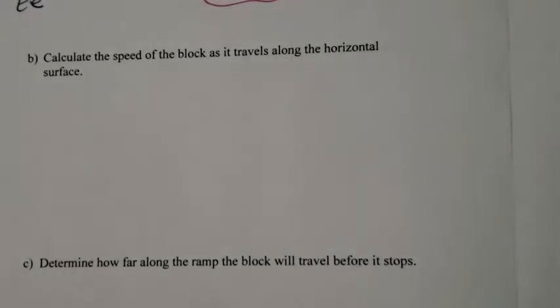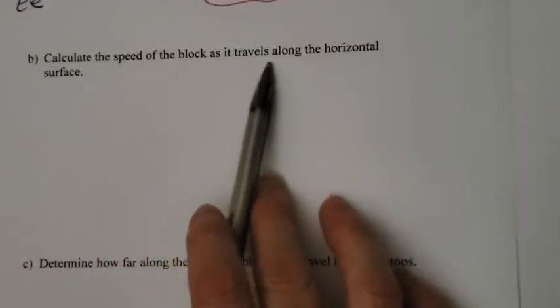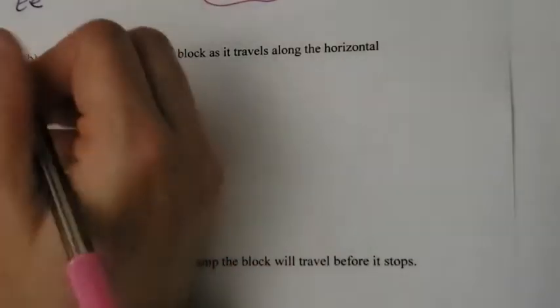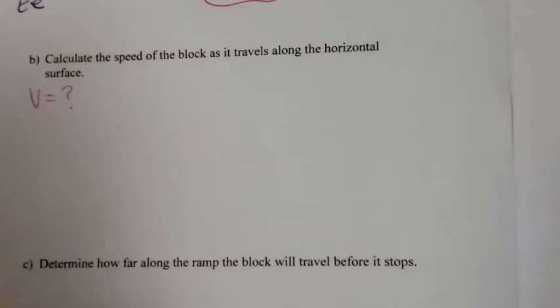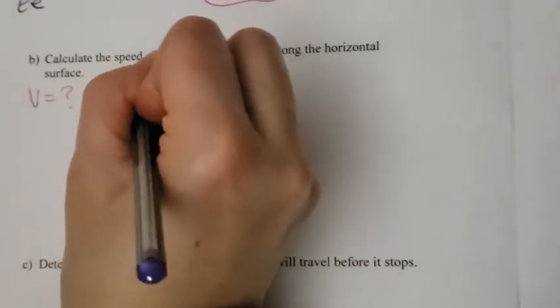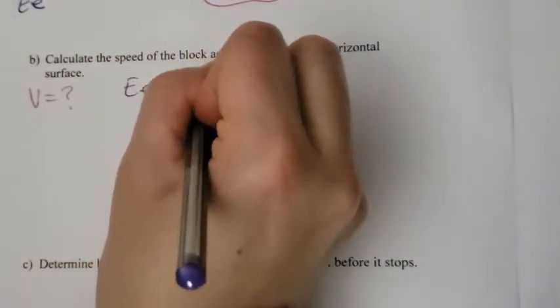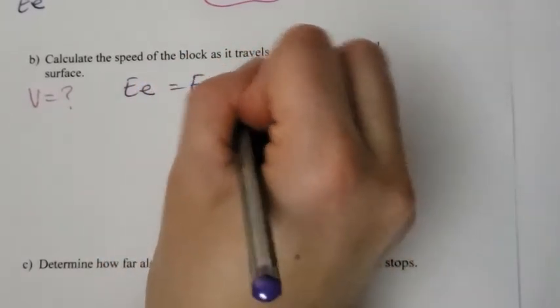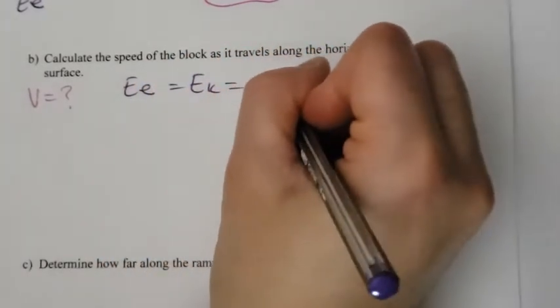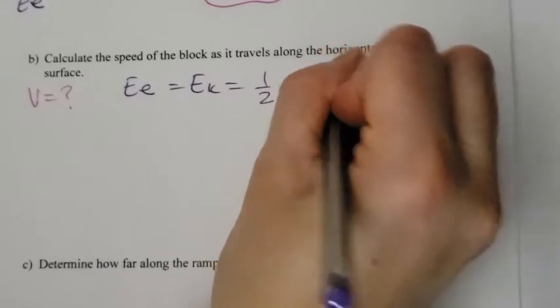So we've compressed the block, and then when it's released, it uncompresses, and all the elastic energy gets changed into kinetic energy. The question says, calculate the speed of the block as it travels along the horizontal surface. I know that all the elastic potential energy got converted into kinetic energy, and the formula for kinetic energy is one-half mv squared.